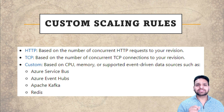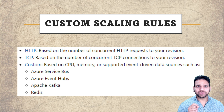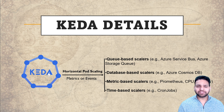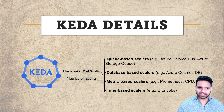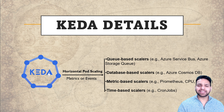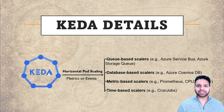This event-driven scaling in Azure Container Apps is done using KEDA. KEDA is Kubernetes event-driven autoscaling, a mechanism in Kubernetes. Horizontal pod scaling means different pods or containers can be scaled up and down based on different metrics or events.